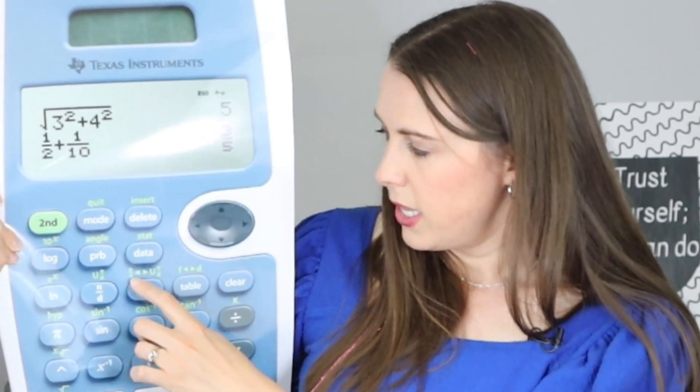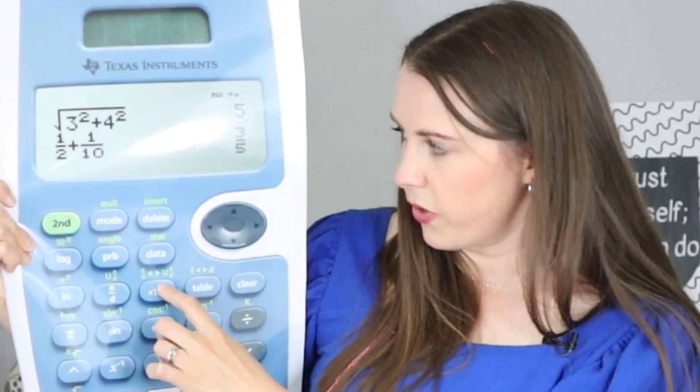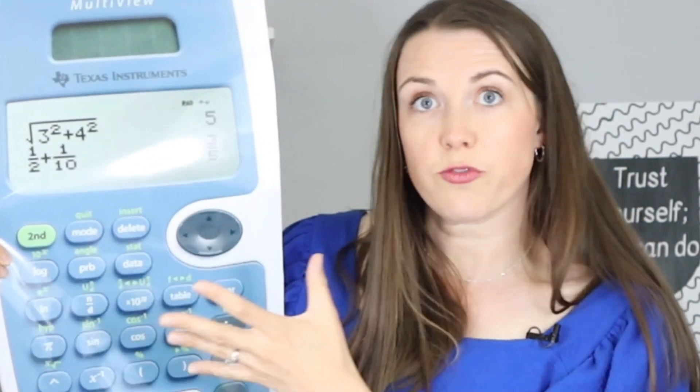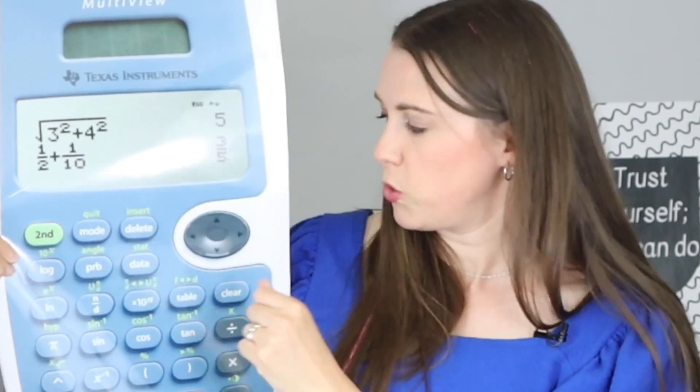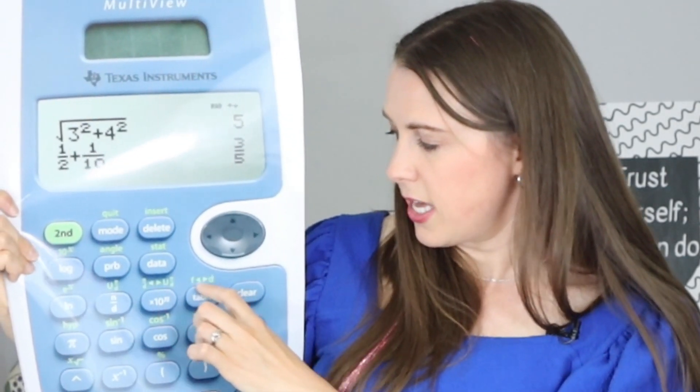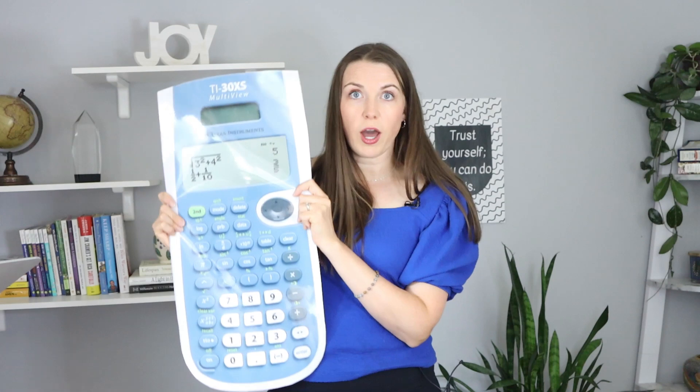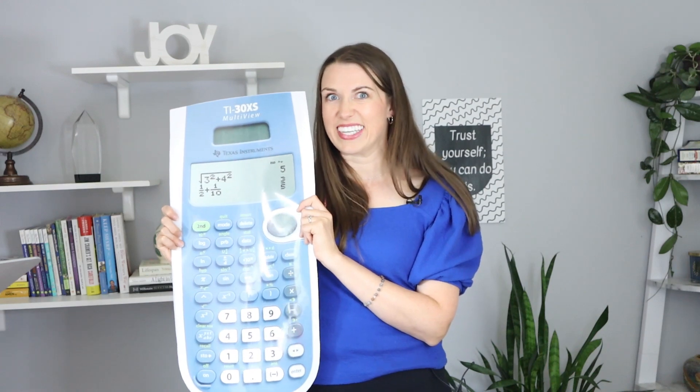And then also this right here in the green, you go second, and then you press that, and it will switch from a proper fraction to an improper fraction or toggle between the two. And this f to d, that is fraction to decimal. So really important keys to know how to use on your calculator. And I do have a calculator video. So check that out if you haven't already.